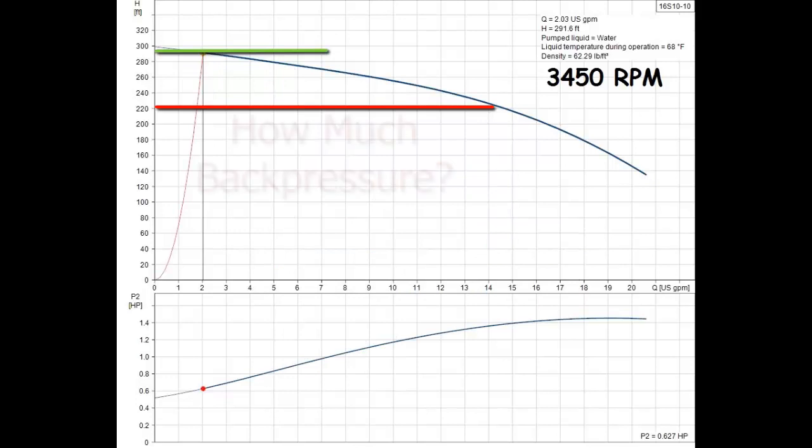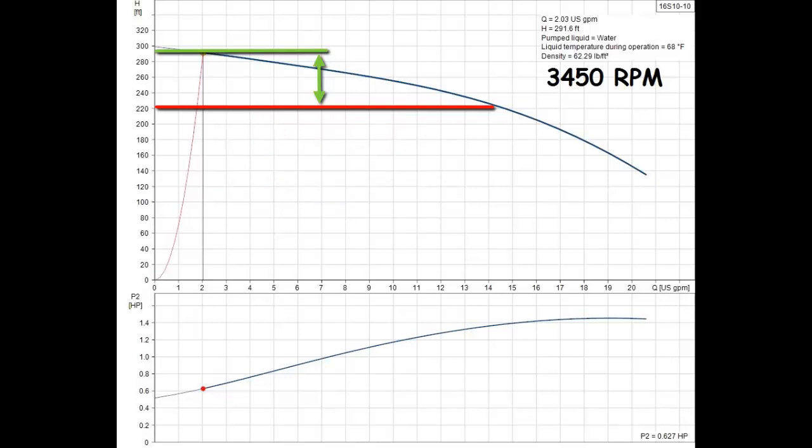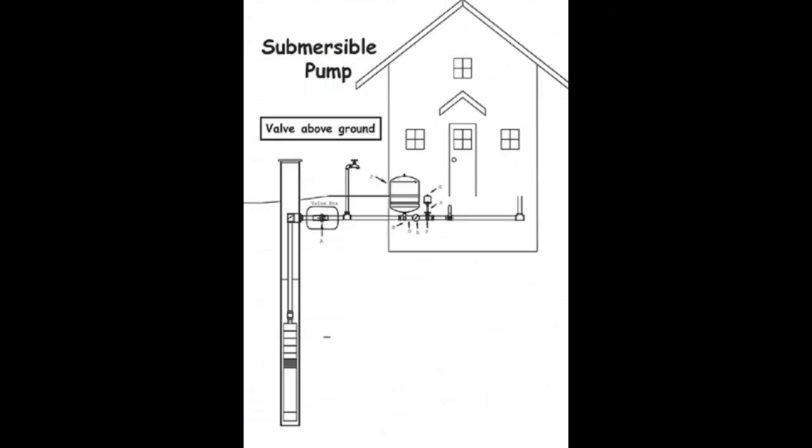However, the amount of back pressure needs to be figured to make sure the pressure rating of the pipe and the valve is adequate. The pump curve is also used to figure back pressure. When figuring back pressure, we always use the worst case scenario, which is the high static water level, not the pumping level.